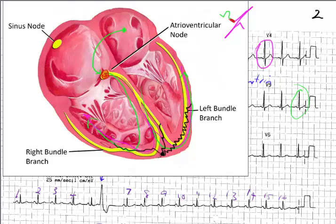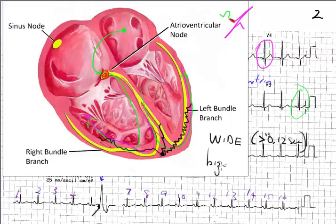The ventricular ectopic is excluded from the HIS bundle system, so it tends to dribble through the ventricle. This results in a wide and bizarre-looking QRS, because there's not the coordinated depolarization of the heart. The hallmark of a ventricular ectopic is that it is wide — that is, greater than or equal to 0.12 seconds — and it is bizarre looking. Whereas an atrial ectopic will look very similar to the normal QRS, but it will be in the wrong spot. I hope this has helped you understand ventricular ectopics and I'll see you for the next video.